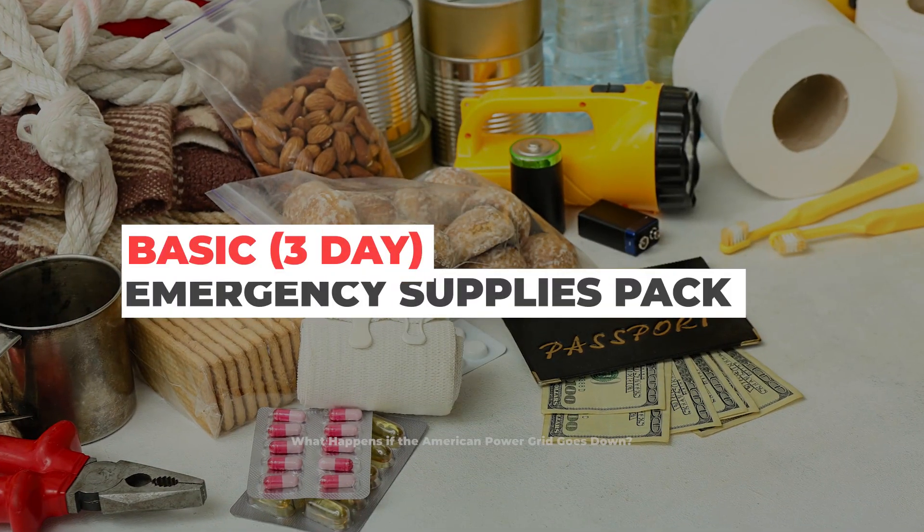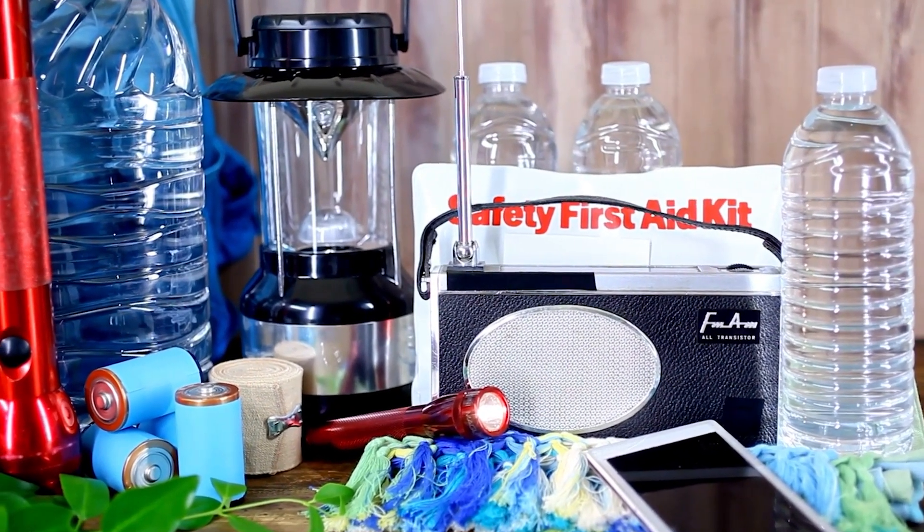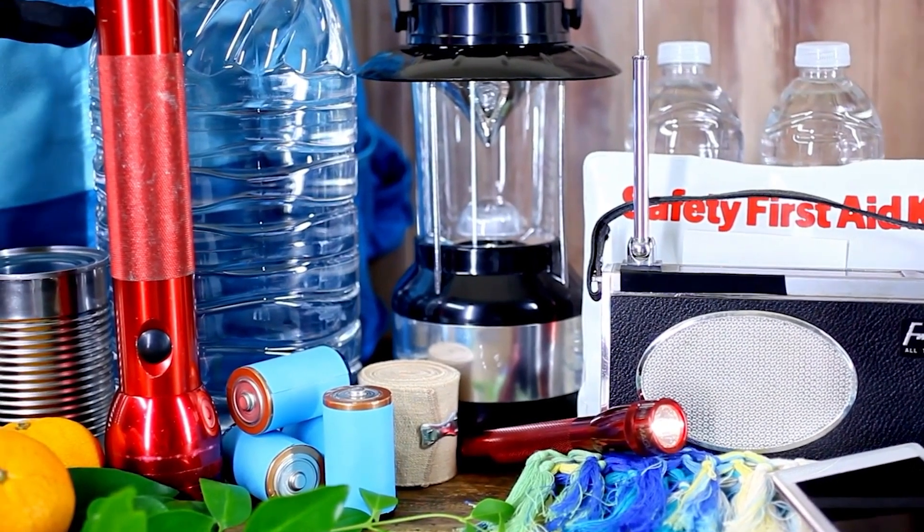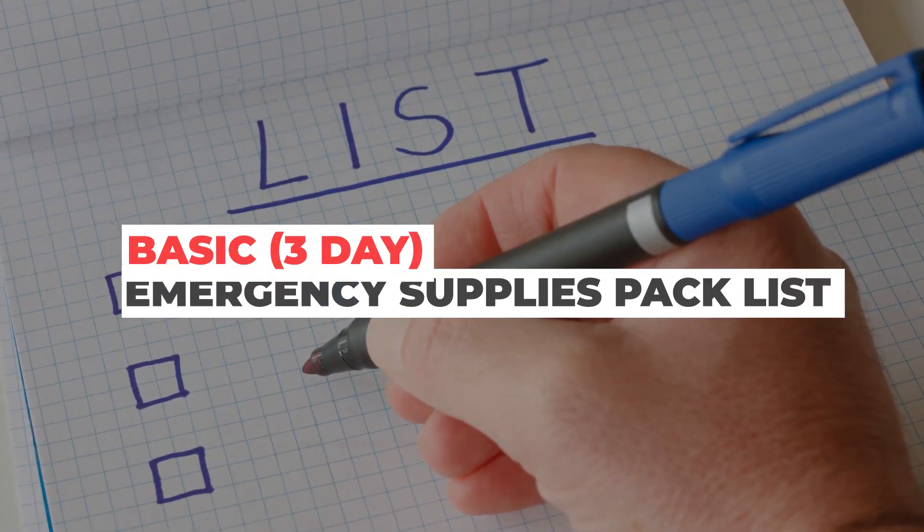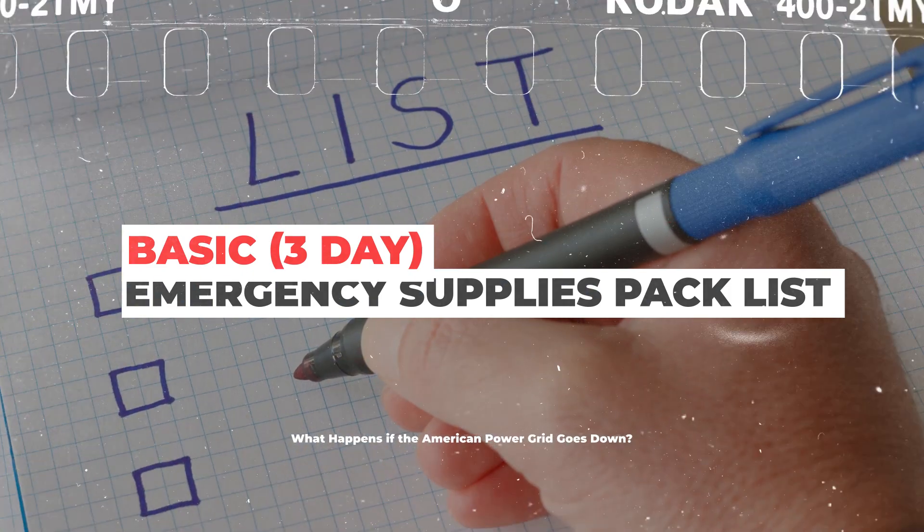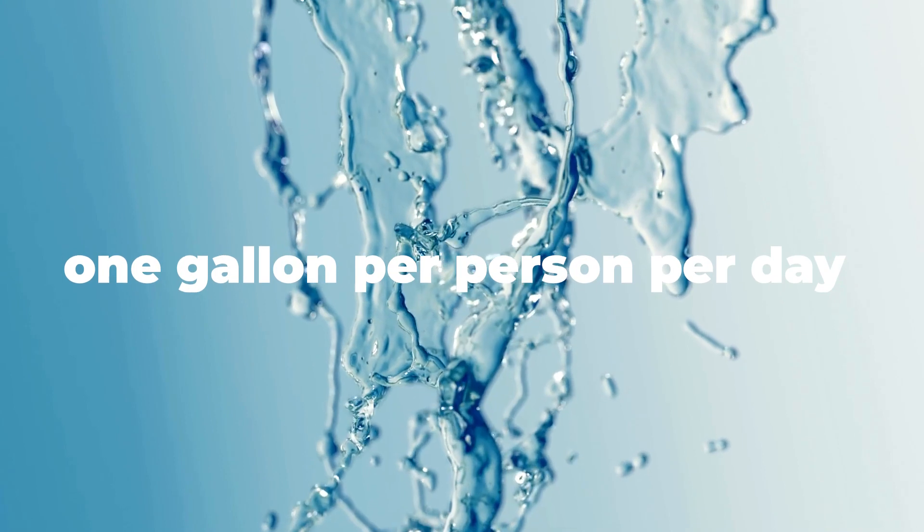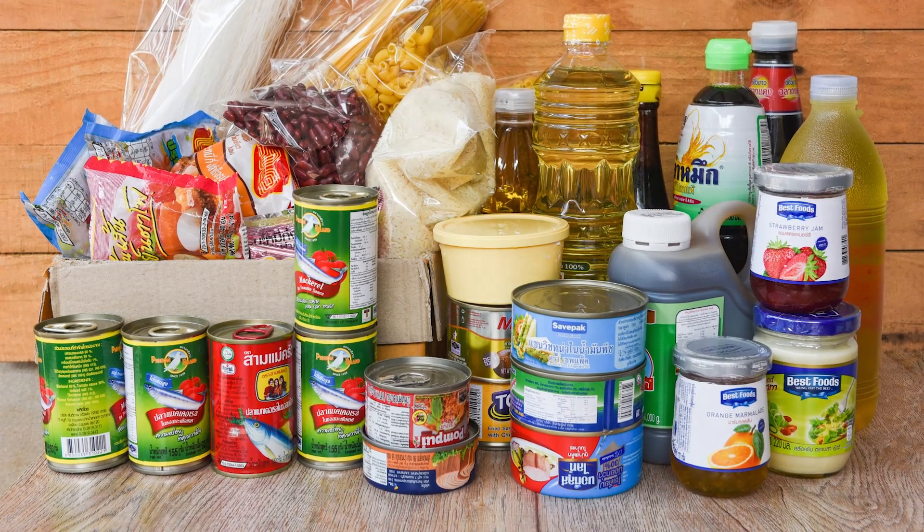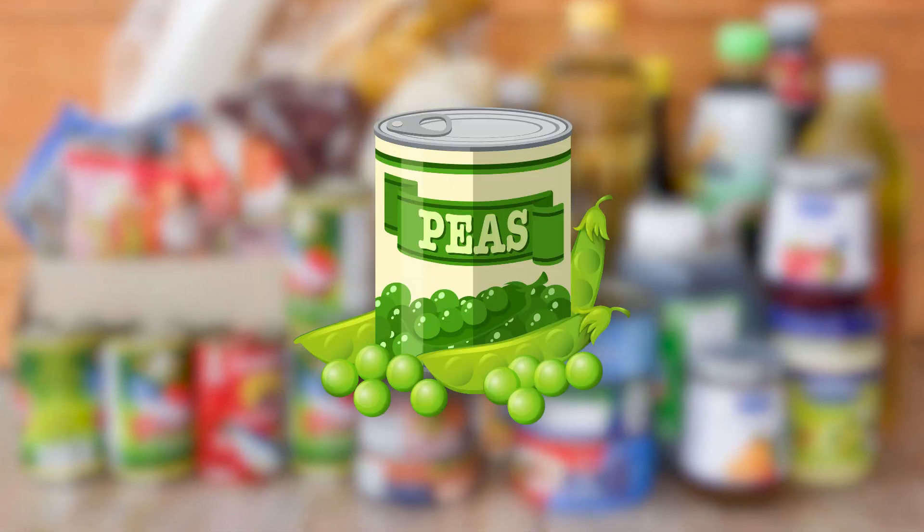An emergency disaster supplies kit is a minimum basic three-day emergency supplies pack of items you will need if your power goes out in a natural or man-made disaster to help you shelter in place. Water is number one. You will need a minimum of one gallon per person per day for at least three days for drinking and sanitation. Non-perishable food supply for a minimum of three days per person, ready-to-eat canned meats, fruits, vegetables, and a can opener.